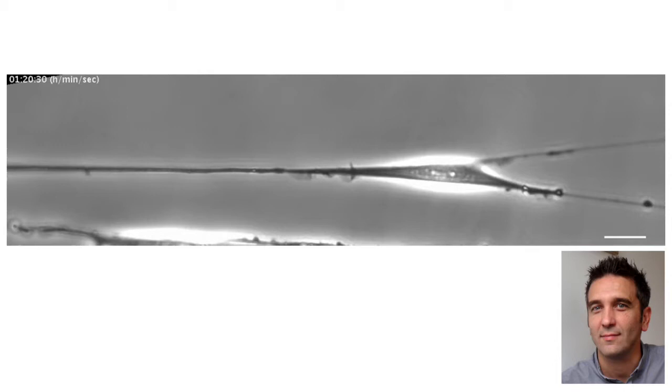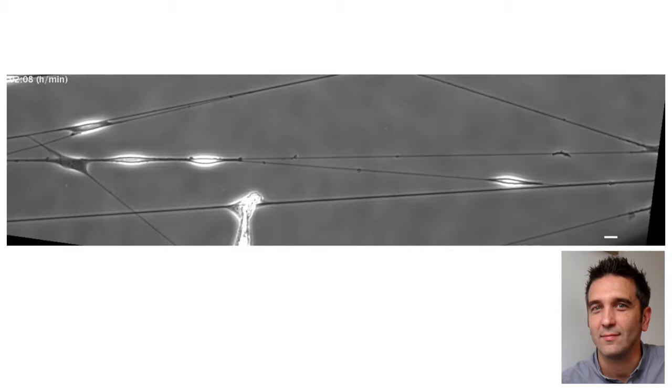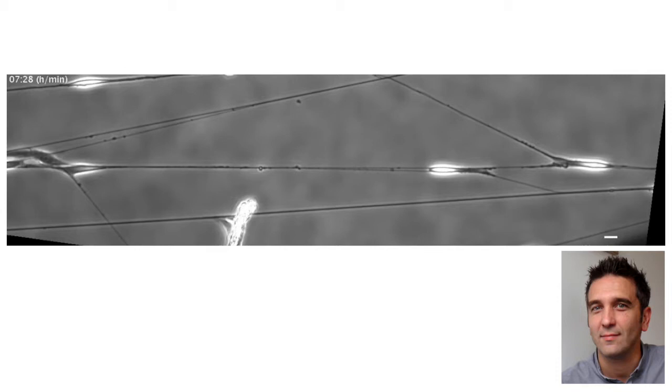The researchers then examined what happened when cells were exposed to multiple nanofibers at the same time. What they observed is that the cell probes randomly, and at one point — for reasons that are for the moment obscure — one side of the cell seems to present the major protrusion system, and that is where the cell goes.